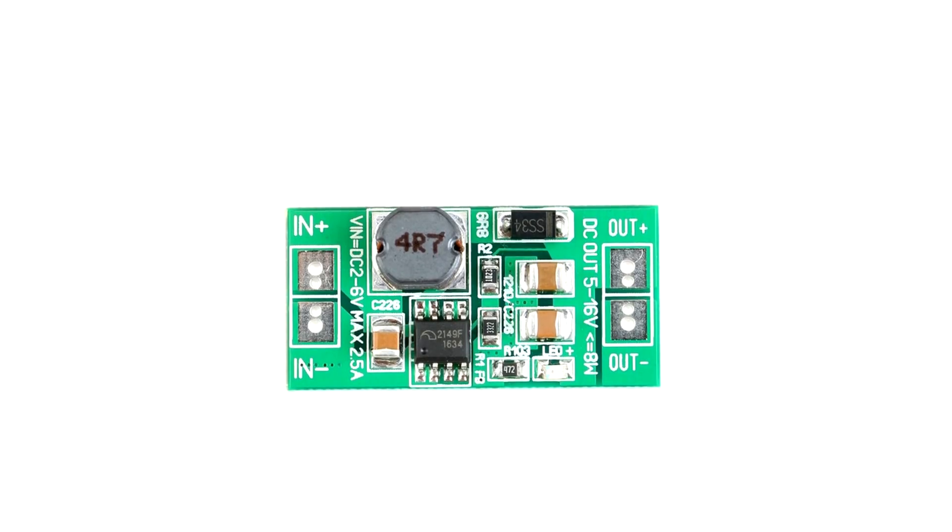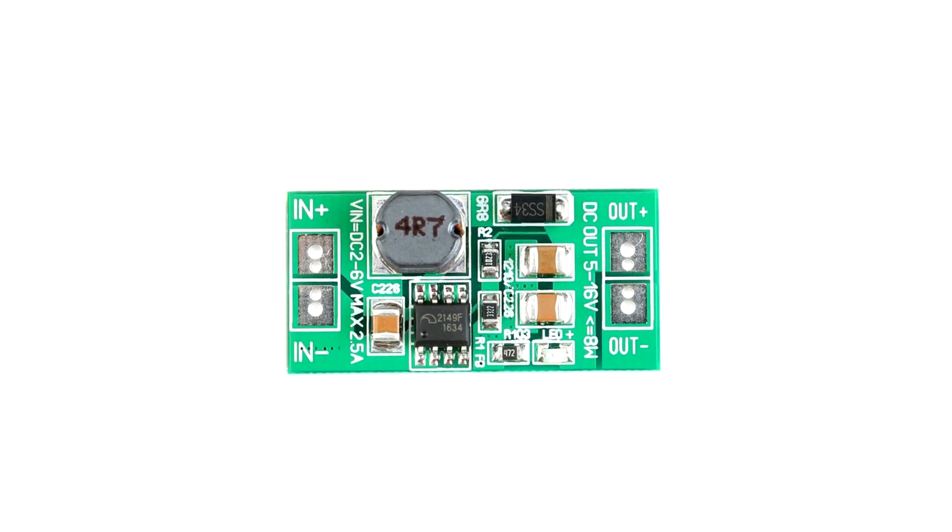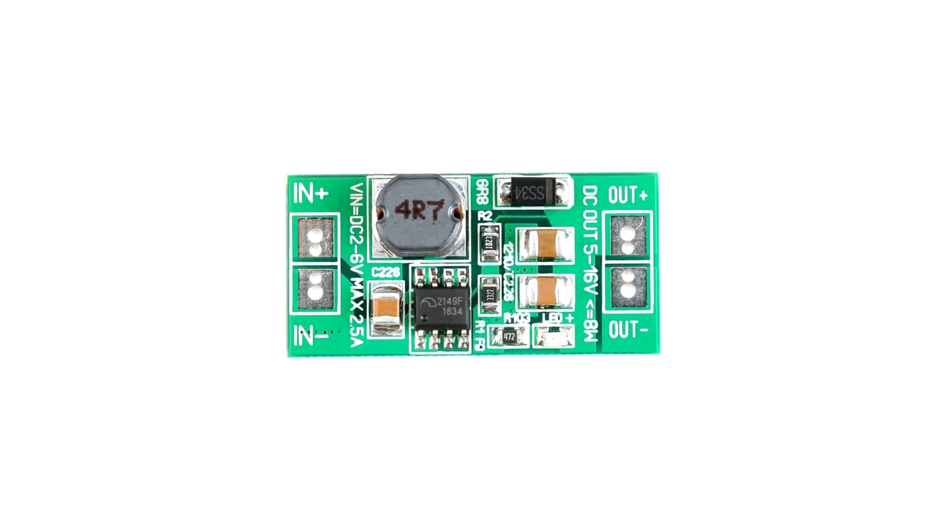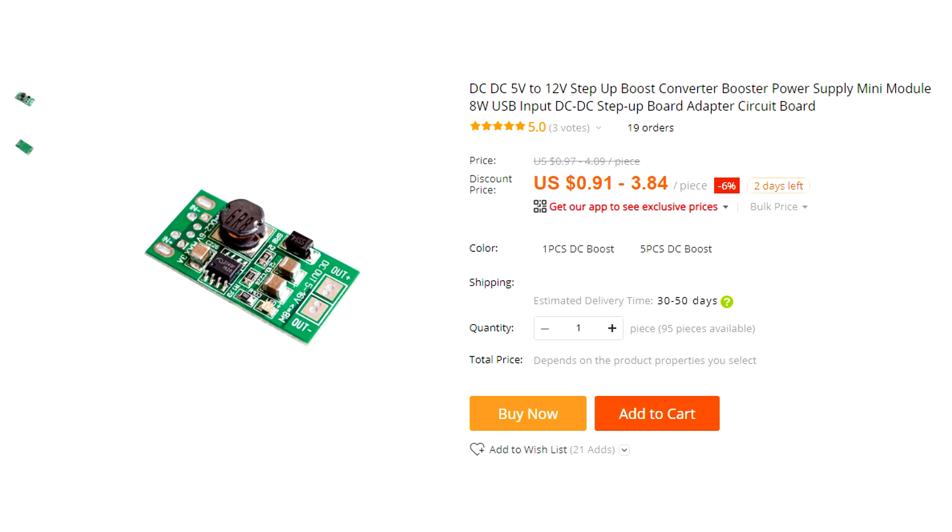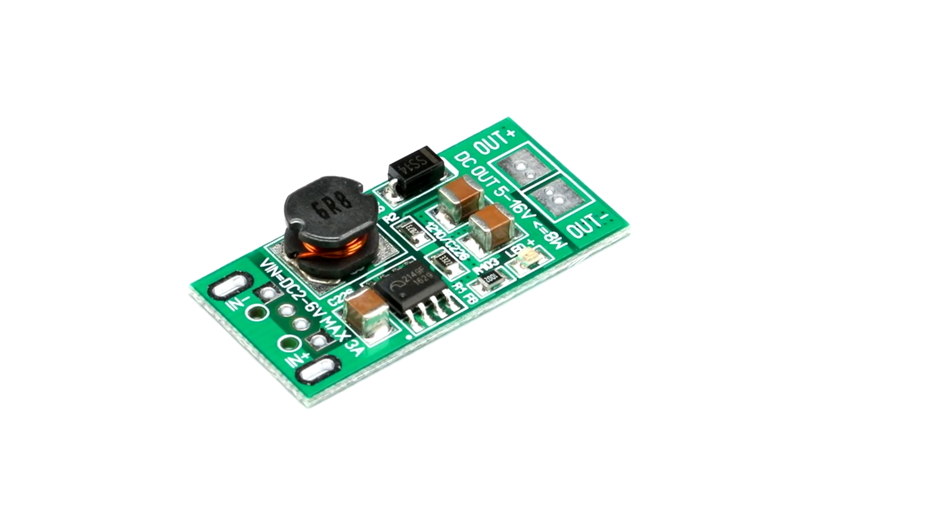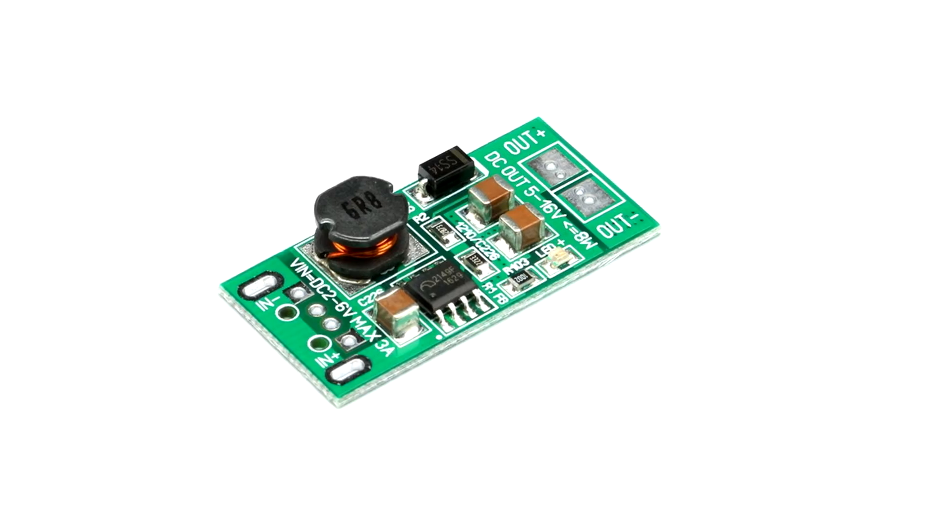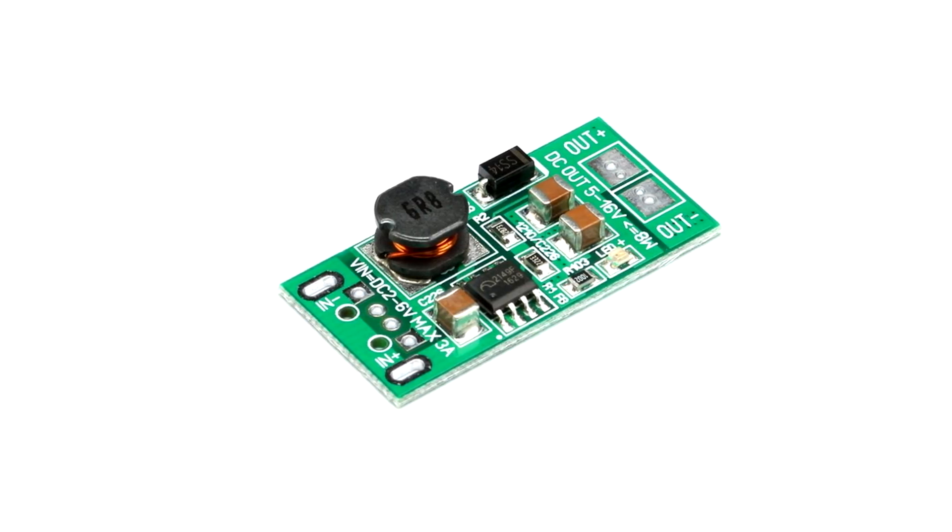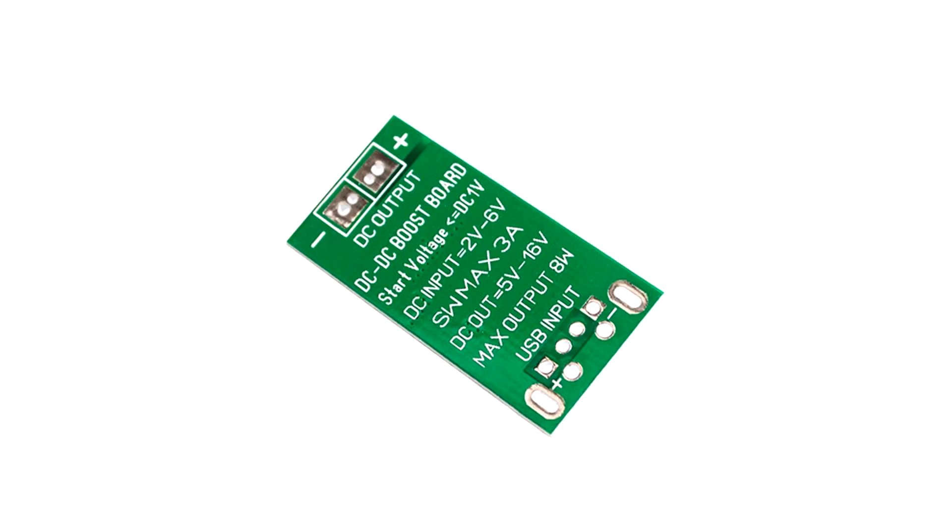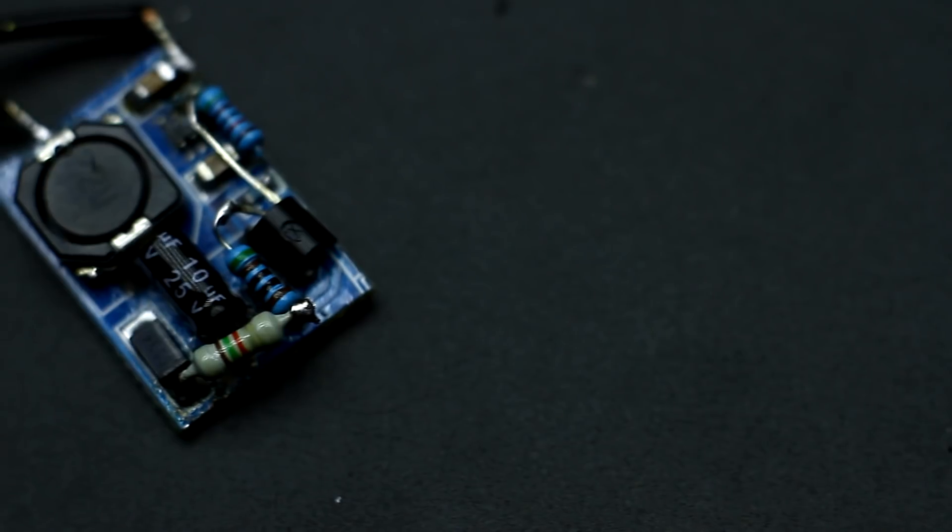As a converter, it is very desirable to use one built on the basis of the ME2149 chip, or like that. Such converters can easily be bought online and they are very cheap. The advantage is that they have a very small no-load current, about 200-300µA. I ordered several such converters, but I got tired of waiting for the parcel and decided to go some other way.